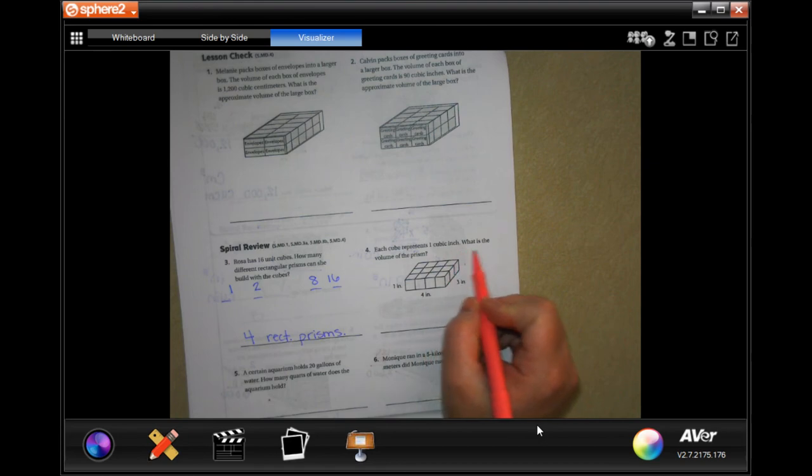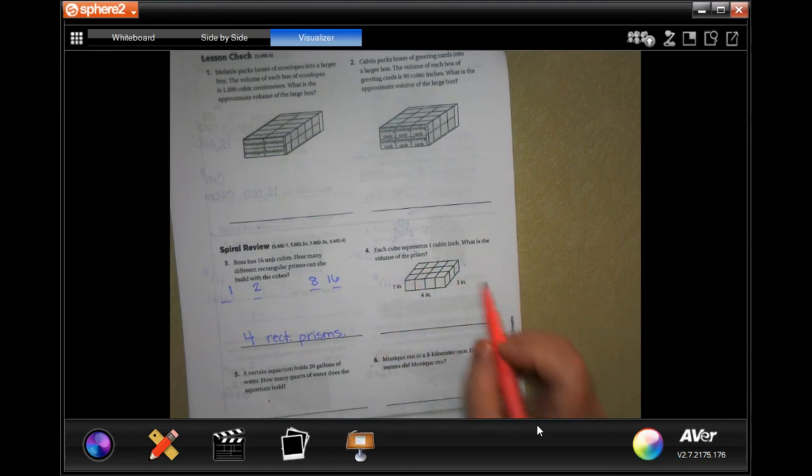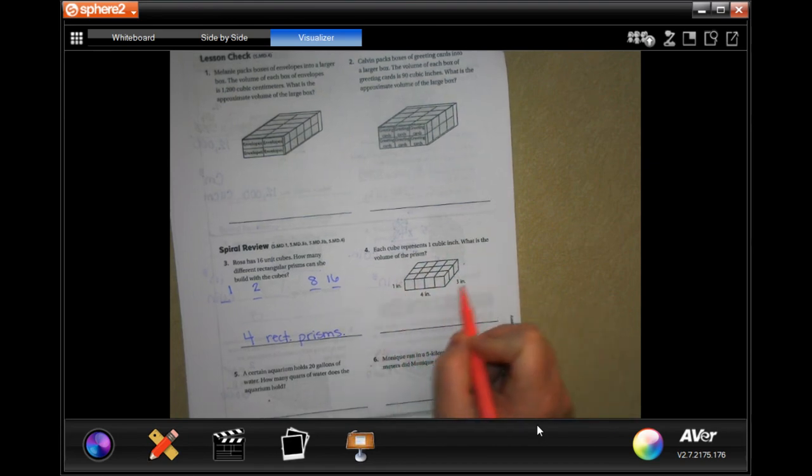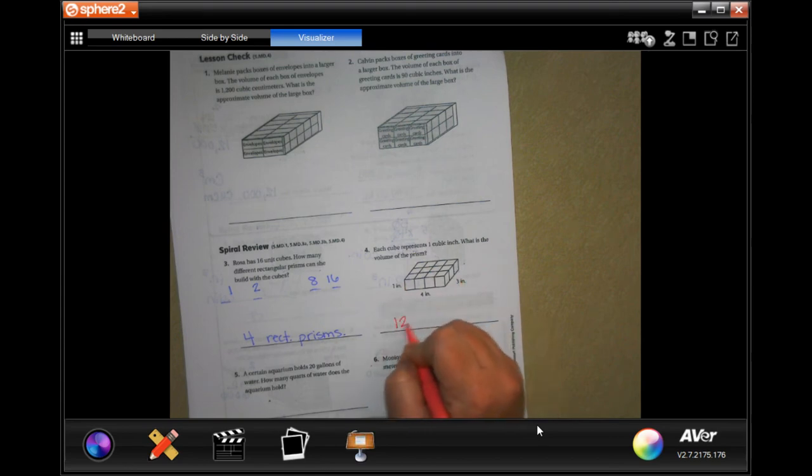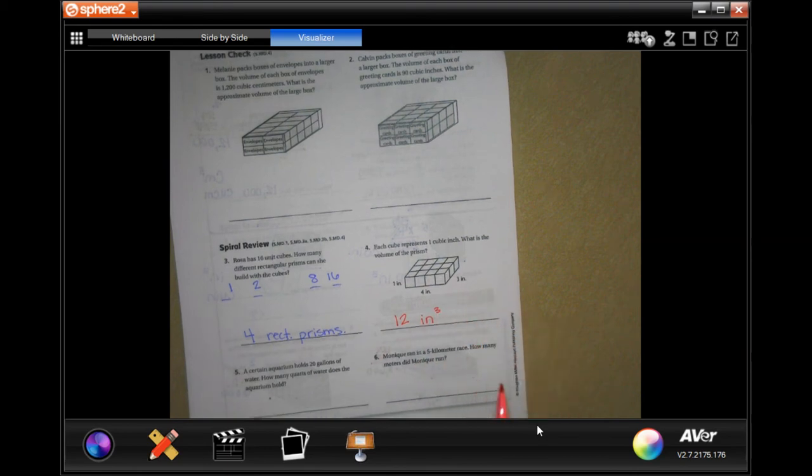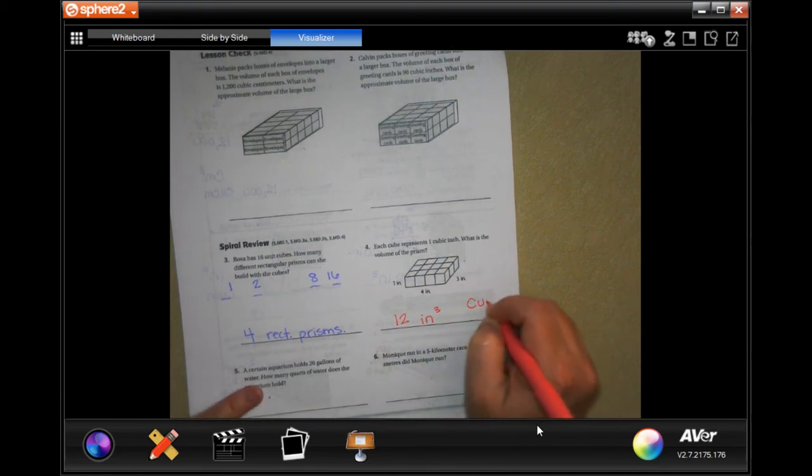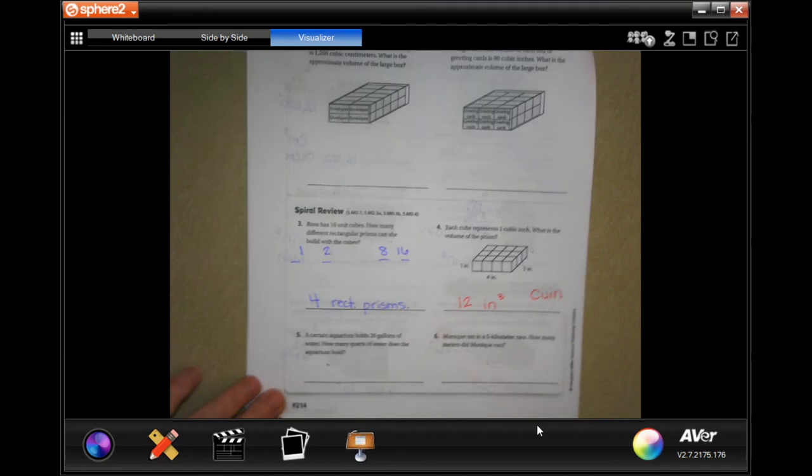Each cube represents 1 cubic inch. What is the volume of the prism? Well, 1 times 4 times 3. So 1 times 4 is still 4 times 3 is 12 inches cubed. You can also write cubic inches. Doesn't change anything. Same answer.